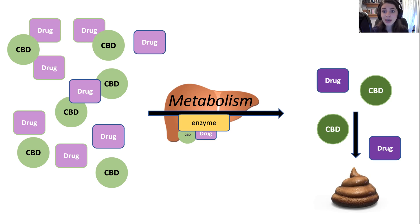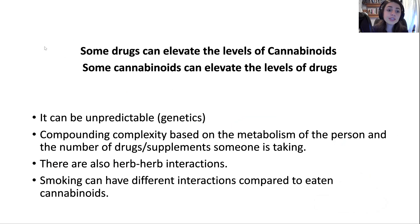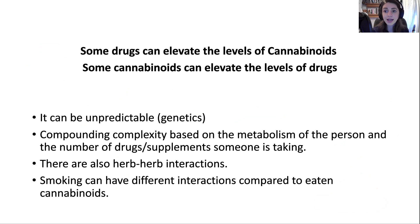That would be way too complicated because we'd have to do that with everything. Instead, we study a specific drug, understand how it's metabolized and the effect of concentration, and then it's going to be different for everyone based on how quickly you metabolize drugs and what drugs you're on. It's important to note that some drugs can elevate the levels of cannabinoids and some cannabinoids can elevate the levels of drugs. Some people say, 'I took this drug and my tolerance dropped — I used to smoke three joints a day and now two puffs and I'm obliterated,' and that can absolutely relate to this.